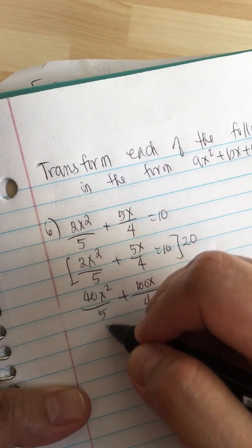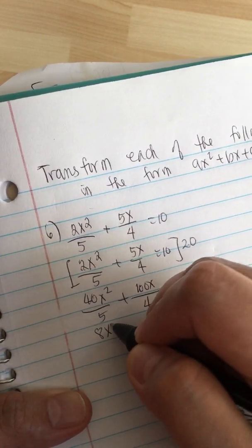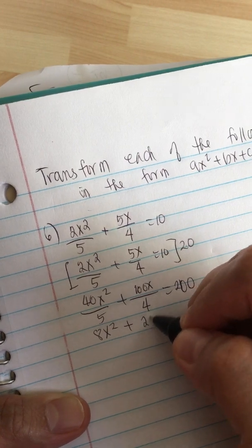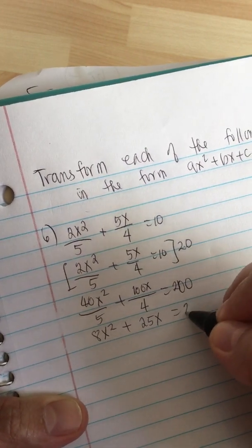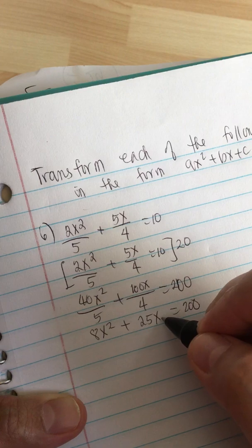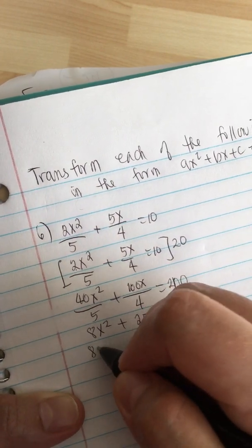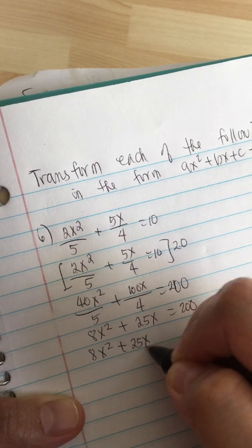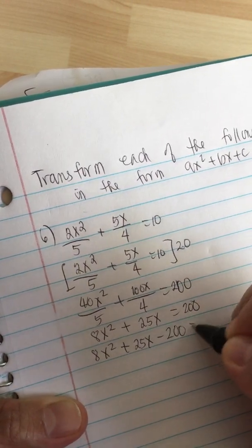40 divided by 5 equals 8x squared, plus 100 over 4 equals 25x, equals 200. Now we put 200 on this side, so we have 8x squared plus 25x minus 200 equals 0.